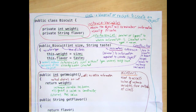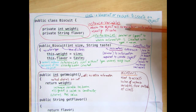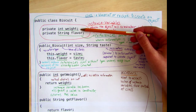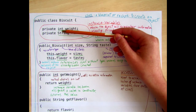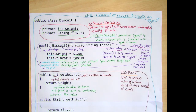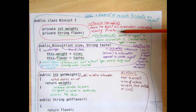The thing we generally put first in a class is its instance variables. These are the information that each biscuit will need to know about itself. Each biscuit will need to know its own weight, which will be stored as an integer — a whole number — and also its flavor, which will be held as a string, which is a word, a string of characters. These instance variables are generally private because only a biscuit can know its own weight and flavor. You don't want anyone to just be able to reach in and change that — that would be violating the privacy of that biscuit.